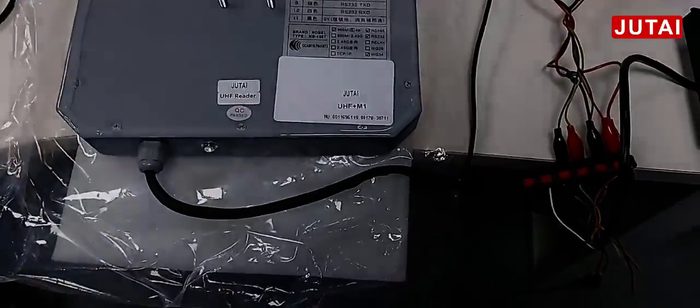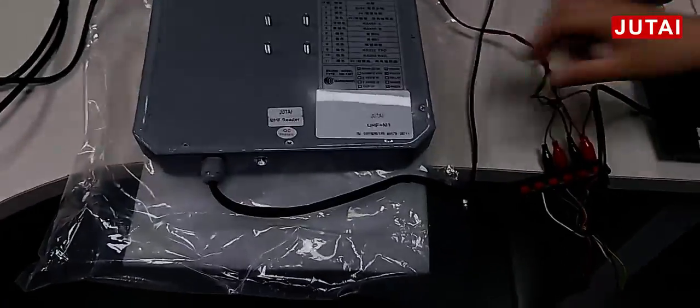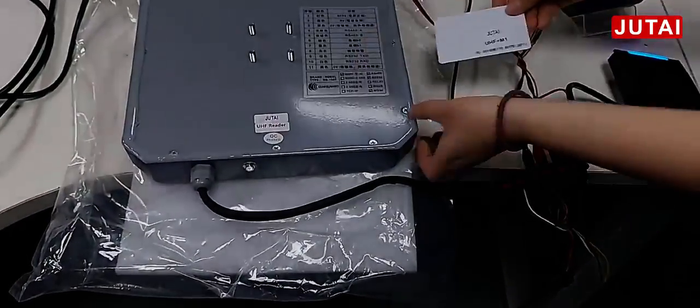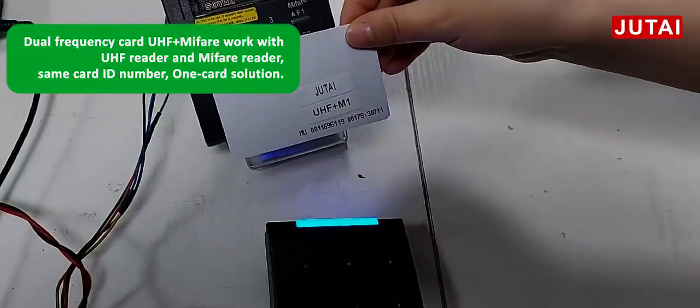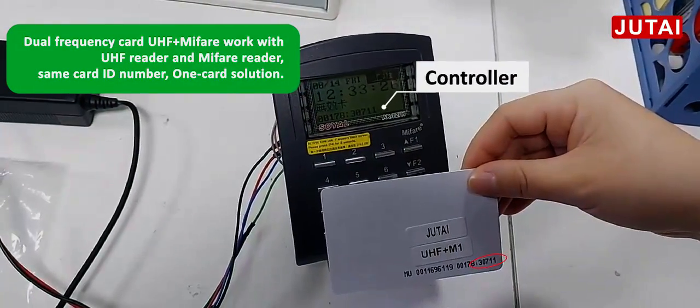We let it work with the UHF Reader. We start. Let it read with the UHF Reader. We check the card number 30799.